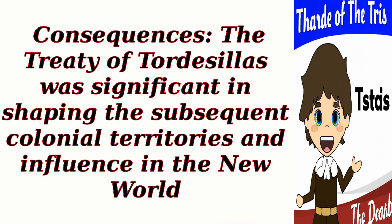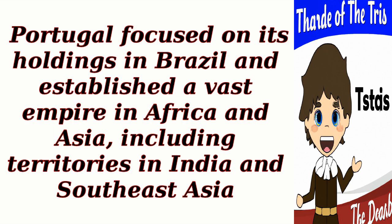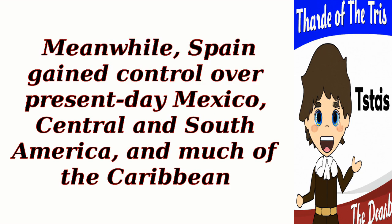The Treaty of Tortosillas was significant in shaping the subsequent colonial territories and influence in the New World. Portugal focused on its holdings in Brazil and established a vast empire in Africa and Asia, including territories in India and Southeast Asia. Meanwhile, Spain gained control over present-day Mexico, Central and South America, and much of the Caribbean.